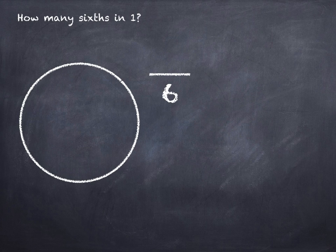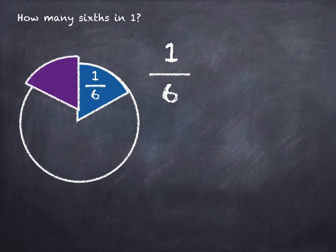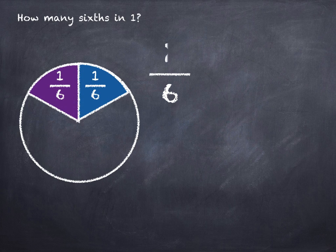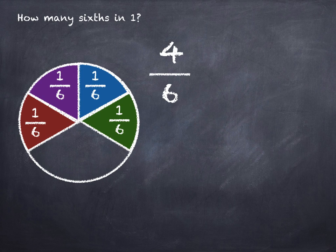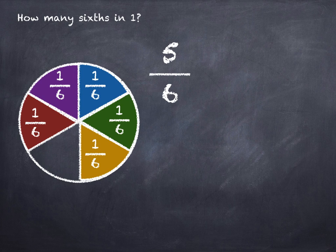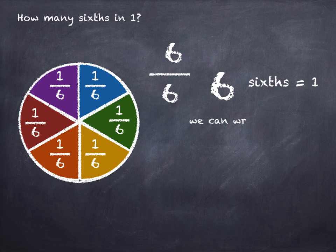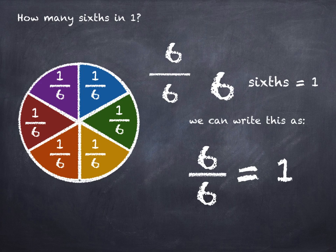How many sixths in one? One sixth. Two sixths. Three sixths. Four sixths. Five sixths. And six sixths. Six sixths equals one. We can write this as six out of six equals one. Six sixths equals one.